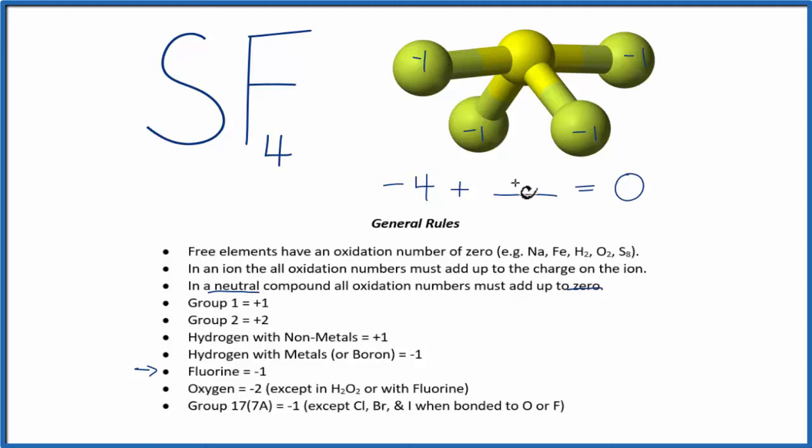Minus four plus four, this is the oxidation number on the sulfur. So the sulfur has an oxidation number of plus four, and all of these together add up to give us the zero.